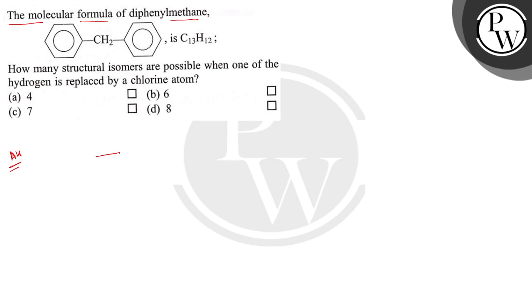The molecular formula is given and the structure is this. This is diphenyl methane. So one of the hydrogen is replaced by chlorine. Then what are the possible structures? Let's draw the possible structure when one hydrogen is replaced by chlorine.